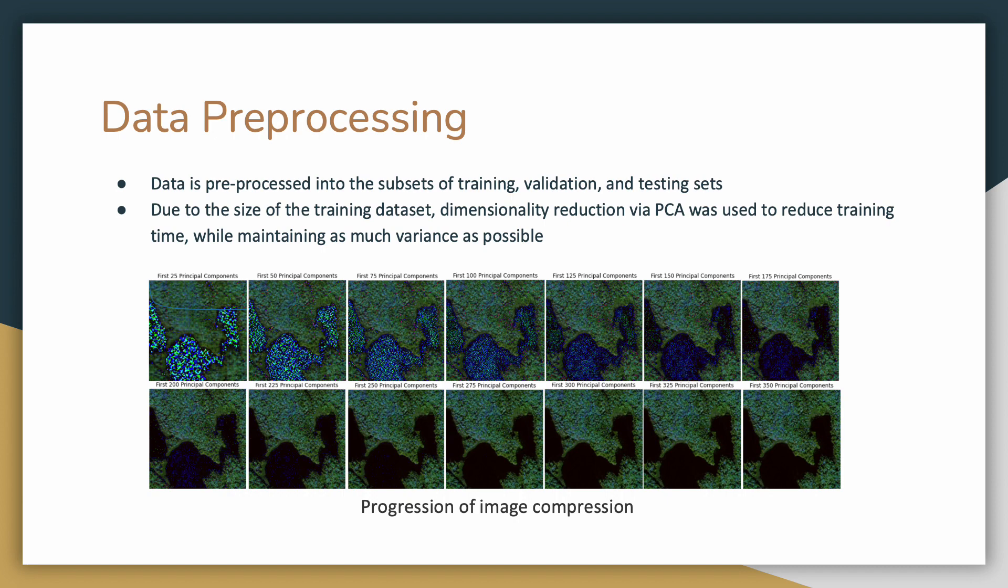Because the training dataset includes over 30,000 350 by 350 pixel color images, we had to perform dimensionality reduction via PCA. We used PCA to determine the number of principal components necessary to maintain enough variance in the data for high testing accuracy.